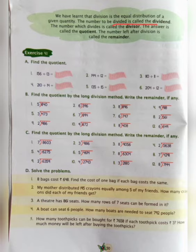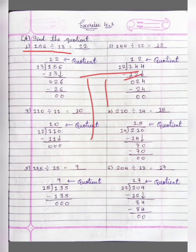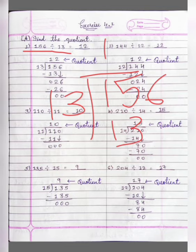Now let's see exercise 4.1. Find the quotient. 156 divide by 13. Here we will write 156 divide by 13. 13 ones are 13. 15 minus 13 is equal to 2.